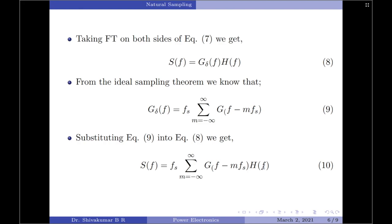Now let us assume that the input signal g(t) is strictly band-limited, so the frequencies in g(t) vary only between −W and +W. Additionally, g(t) is sampled at a rate fs greater than the Nyquist rate, i.e., fs > 2W where W is the highest frequency content of g(t). By performing sampling with these restrictions, the spectrum of the sampled signal consists of periodic replicas of the input signal.